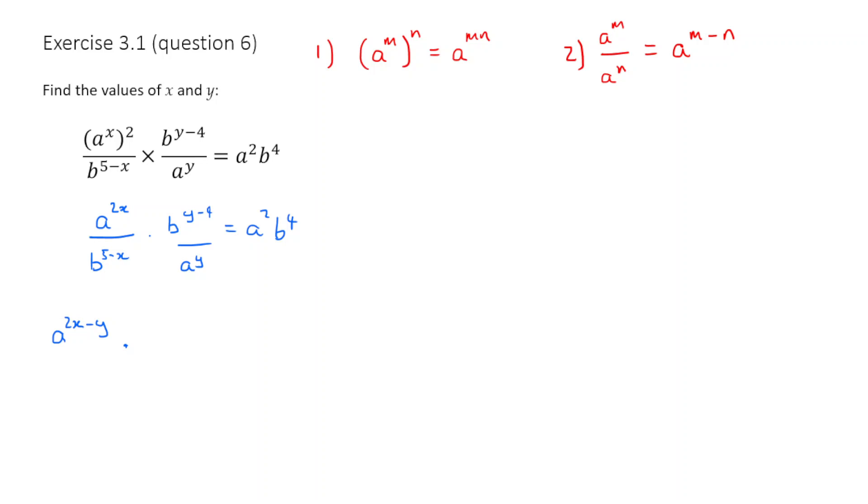And I can do the same thing for b. Here I've got b to the power of y minus 4 divided by b to the power of 5 minus x. So what I've got to do is I've got to subtract those powers as well. So I'm going to end up with b to the power of y minus 4 minus 5 minus x. And this is where we've got to just be a little bit careful, I think, that we don't jump ahead too quickly.